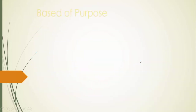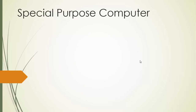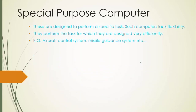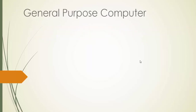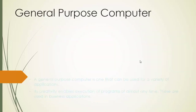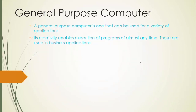Based on purpose: Special purpose computers are designed to perform a specific task. They lack flexibility but perform their designated task very efficiently. Examples include aircraft control systems and missile guidance systems. General purpose computers can be used for a variety of applications, enabling execution of programs of almost any type.